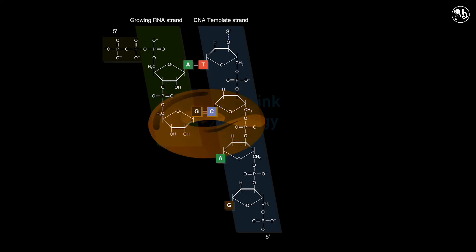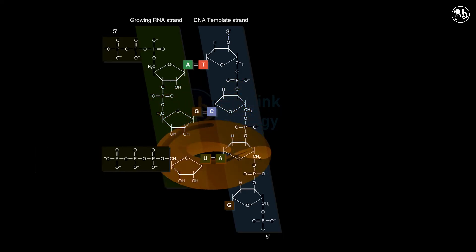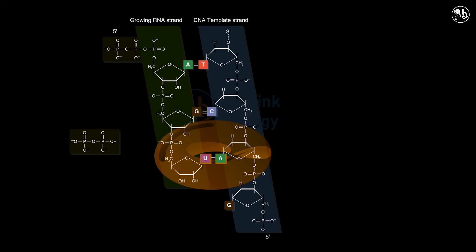This process is repeated as the RNA polymerase moves along the template in the 3' to 5' direction.